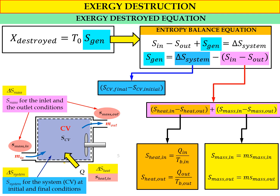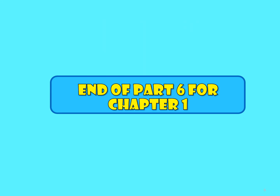Finally, delta S_system is the entropy of the control volume — S_CV at the final state minus S_CV at the initial state, highlighted in white. This is the end of Part 6 for Chapter 1. Thank you for your attention and hopefully you find it useful for your study.